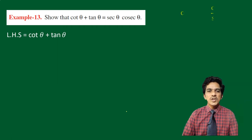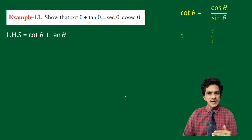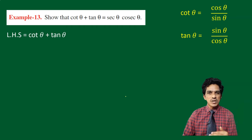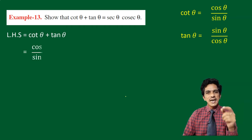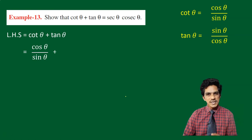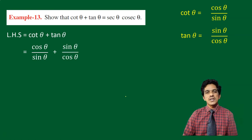As we know, cot is actually the ratio of cos theta by sin theta. And similarly, tan theta is actually sin theta by cos theta. So on the left side, in place of cot, we will write cos theta by sin theta. Plus, in place of tan theta, we write sin theta by cos theta.